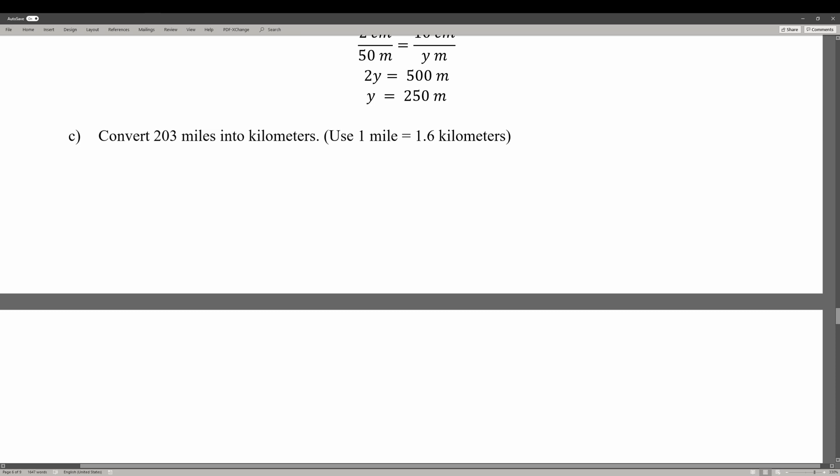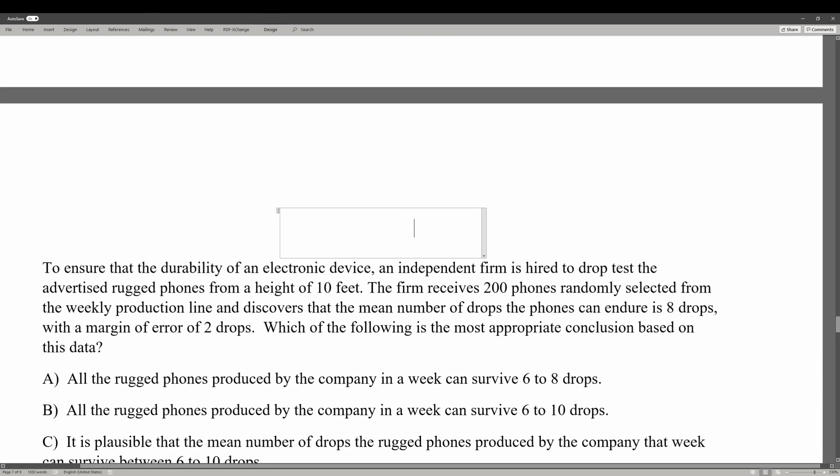Convert 203 miles into kilometers. Use 1 mile equals 1.6 kilometers. The first thing I would do is figure out what I'm trying to convert into. I'm trying to convert into kilometers. Since we're trying to convert into kilometers, we can say that for every mile there's going to be 1.6 kilometers per mile. So we multiply 203 miles by 1.6 kilometers per mile, and we get 324.8 kilometers.